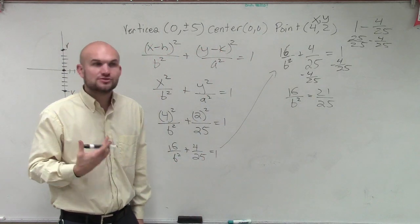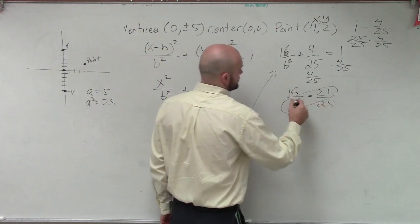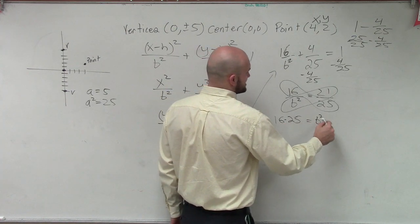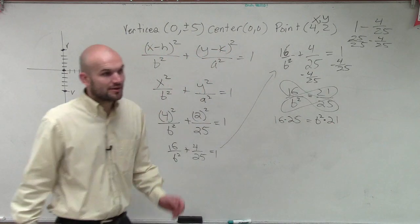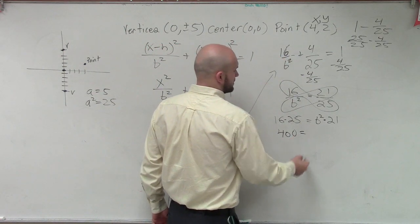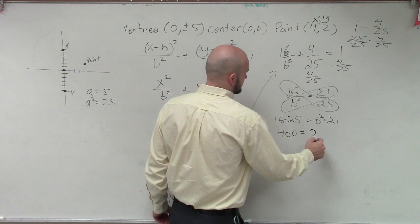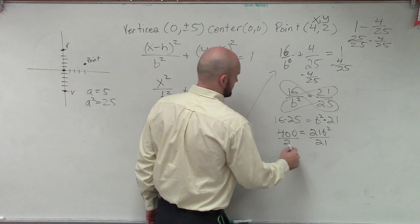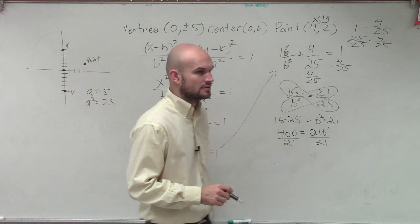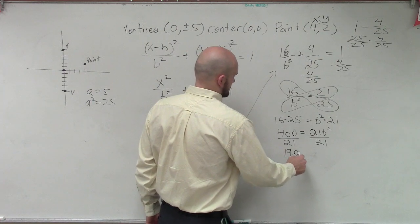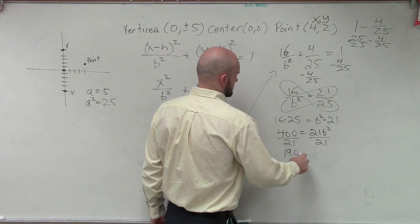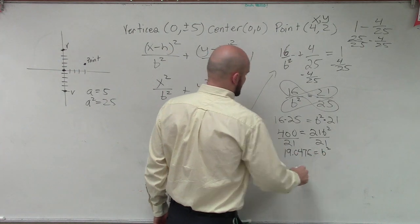Now you have a proportion, so now if you want to solve by cross-multiply, you can. There's other ways to do it, so you can do 16 times 25 equals b squared times 21. Now I don't have my calculator here, this is what? 400. Equals 21 b squared. And then you divide by 21. Wait, is that a 260? No, it's 21 times b squared. Equals 19.0476. Zero what? Seven-six. Four-seven-six. And then square root.